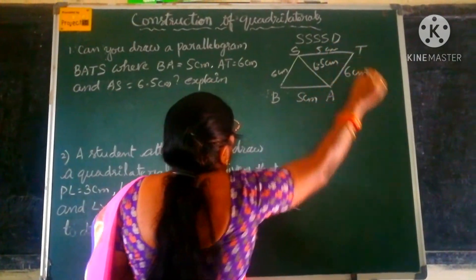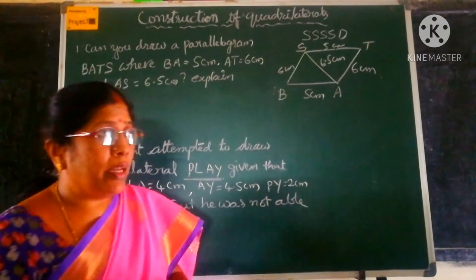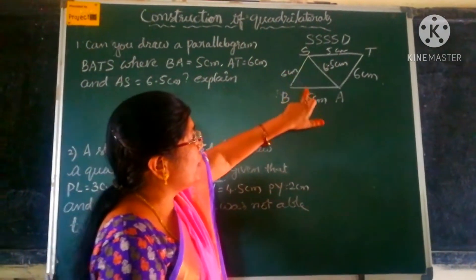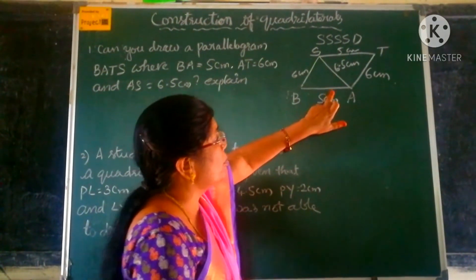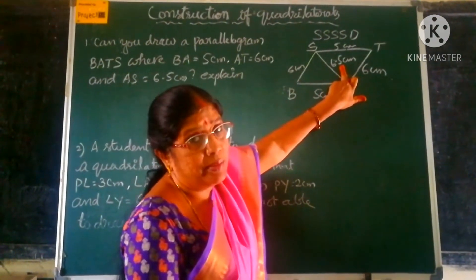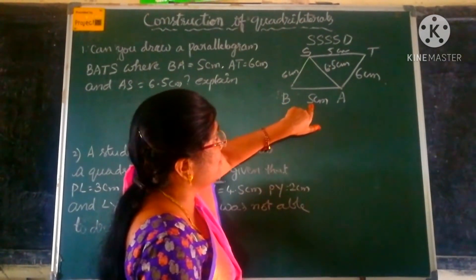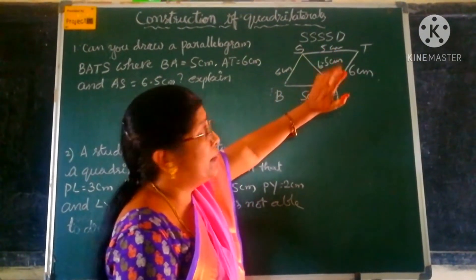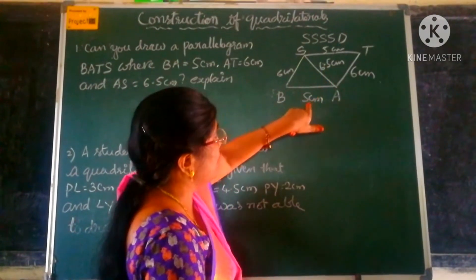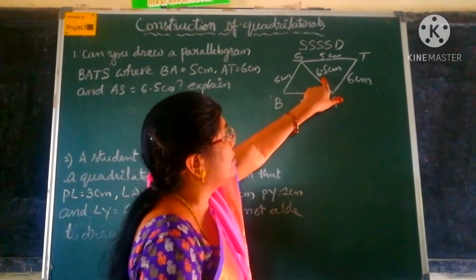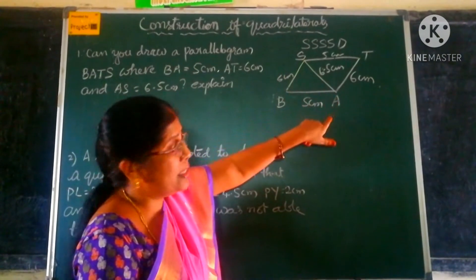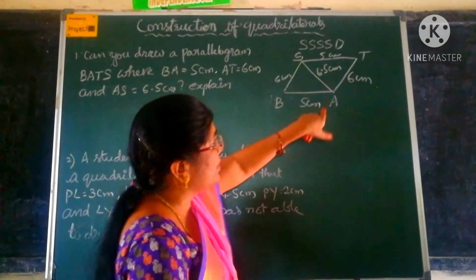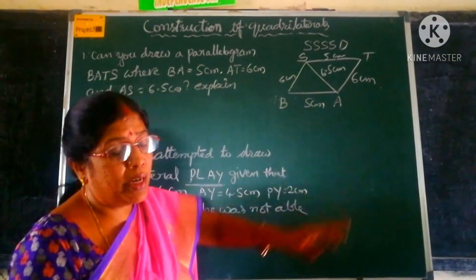To construct a triangle, we have to check one more thing: the sum of any 2 sides should be greater than the third side. So let us check: 6 plus 5 is 11, and 11 is greater than 6.5 — so we can draw this side. And 5 plus 6.5 is 11.5, which is greater than 6. And 6 plus 6.5 is 12.5, which is greater than 5 centimetres. So we can draw this.